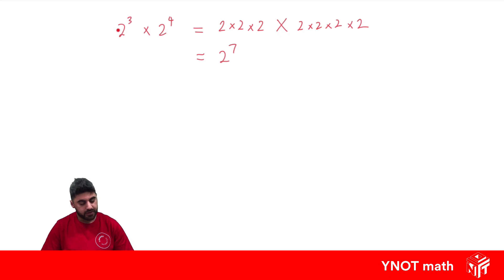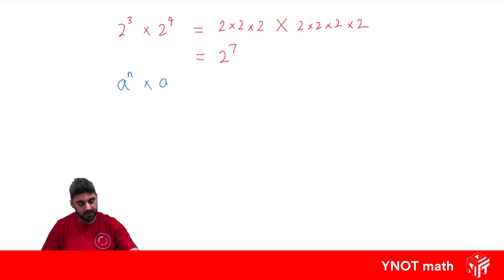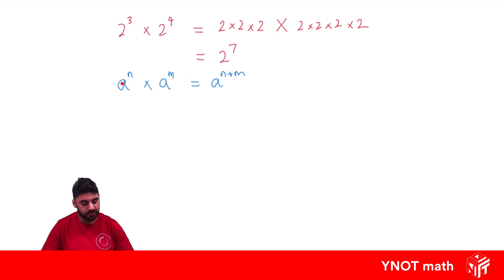It's important to note that we had 2 to the power of 3, 2 to the power of 4, and 2 to the power of 7 — the things we're multiplying have to have the same base. Written as a rule: a to the power of n, multiplied by a to the power of m, equals a to the power of n plus m. In the example above, a was 2, n was 3, and m was 4, and 3 + 4 gave us 7.